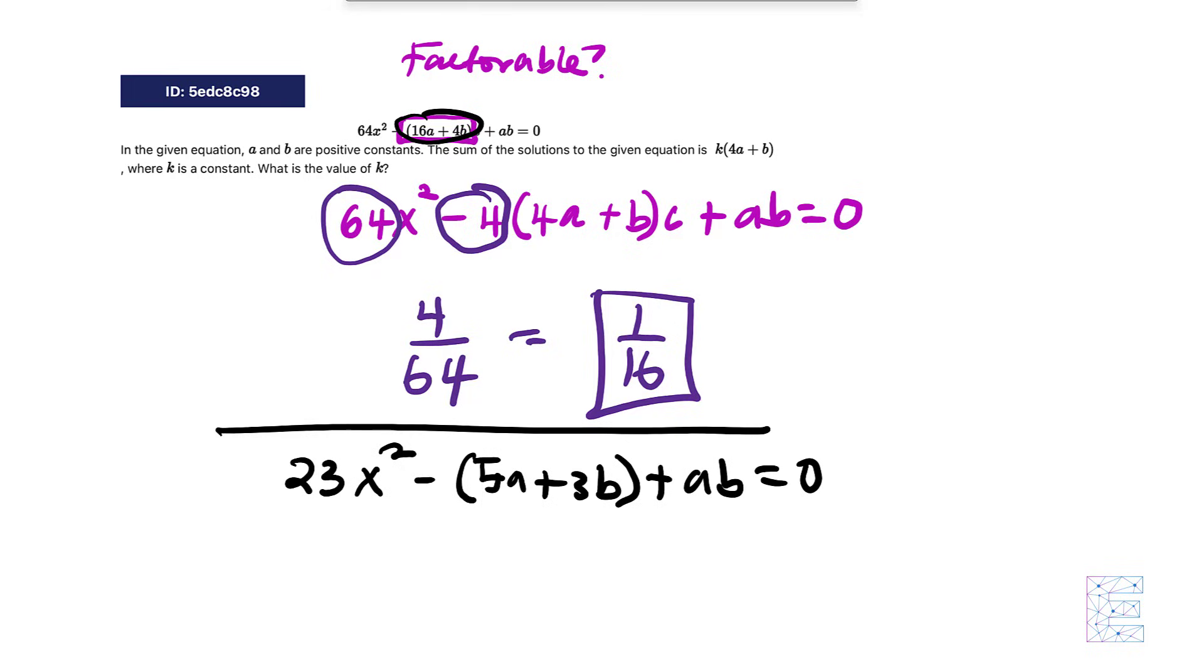Again, since we can't factor anything out of this, there's nothing that we can factor out. We know that there's a coefficient of 1 right here, so the answer to this would be this number over this number. So it's just 1 over 23.